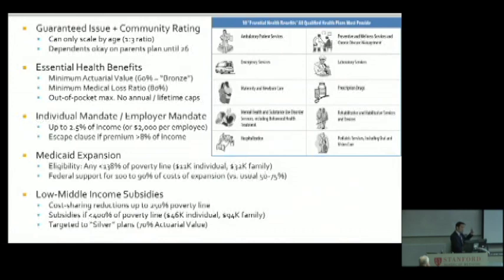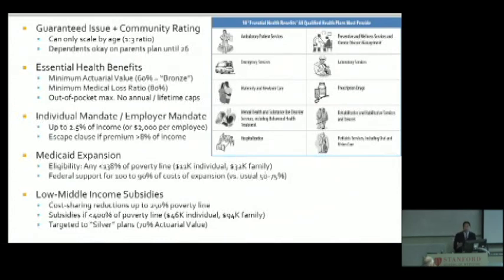There's also a minimum medical loss ratio: 80% of the premiums you pay to insurance has to go back on average to pay for medical claims — insurance companies only have 20% to work with for their administrative and profit needs. There's also a battery of ten essential health benefits described: you can't discriminate against women anymore, so you have to cover maternity care, birth control pills, hospitalizations, rehab, and laboratory services. When I first heard about the individual mandate, my instinct was that's wrong, that's un-American — you can't force somebody to buy something they don't want. But if you want pre-existing conditions to be covered, you have to have something like the individual mandate. The system will unravel unless you have both. They are inextricably tied together.